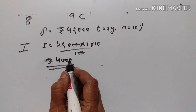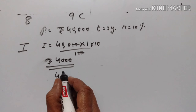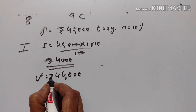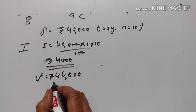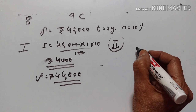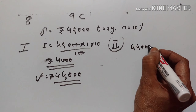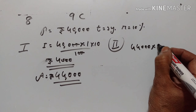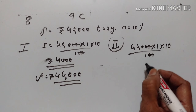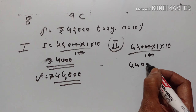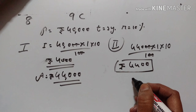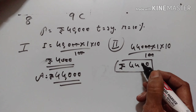When we add this interest to the principal, this becomes Rs. 44,000 — that is the amount. This amount becomes the principal for the second year. So interest for the second year: 44,000 into P, T, R upon 100 gives Rs. 4,400. Rs. 4,400 is the interest for the second year.